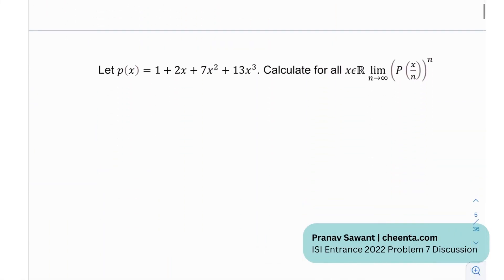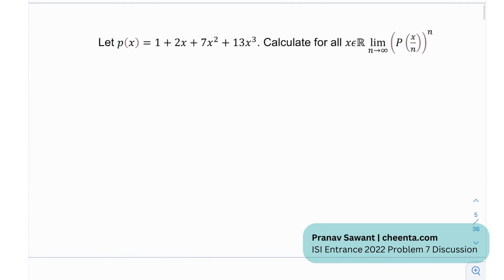Let's begin. So we have P(x) defined as 1 plus 2x plus 7x squared plus 13x cubed, and we have to calculate this limit for all x belongs to real numbers.